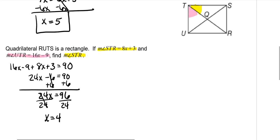So if we need to find angle STR, I need to plug four in there. So eight times four plus three. Eight times four is 32 plus three. So the measure of angle STR is equal to 35 degrees.